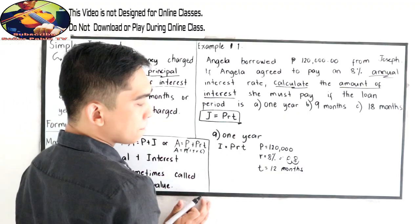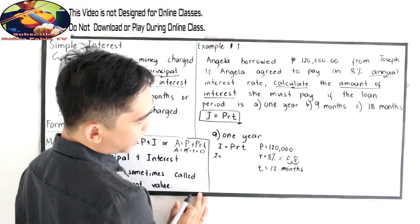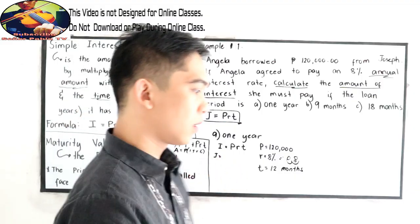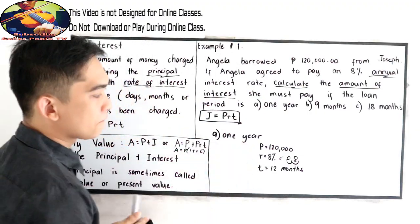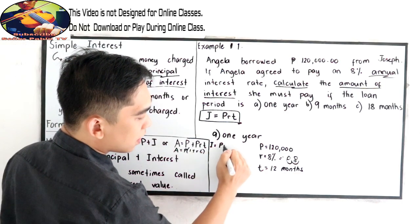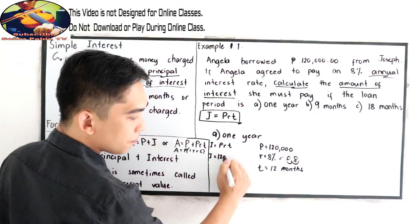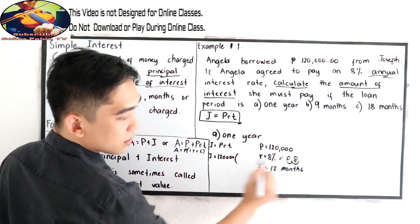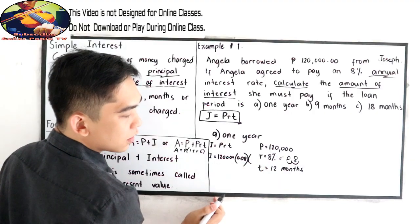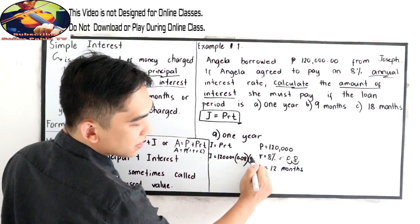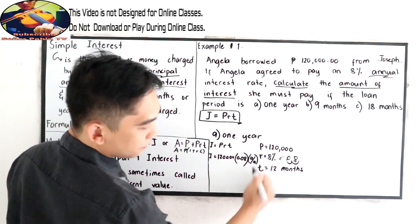Now we're going to solve using our formula. Let us substitute the given. So we have P. I is equal to 120,000 times 0.08 times. So we have 12 months. 12 months over how many months we have in one year? So we have 12. So 12 over 12. This is 12 over 12.